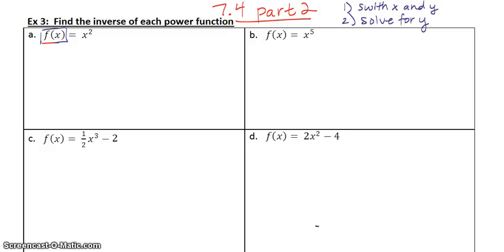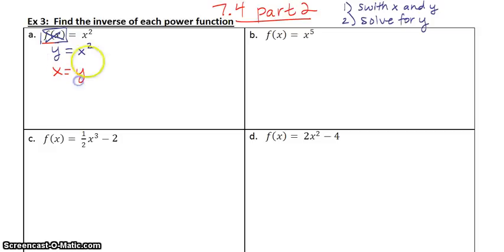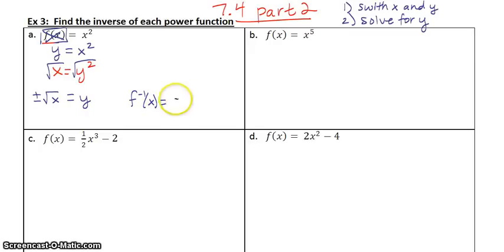Remember, f of x is the same thing as y, so replace it before you do anything. For example 2a, y equals x squared. Step 1: switch x and y. Step 2: solve for y — to get rid of a square, we take the square root. When you square root something, you put a plus or minus in front. So the inverse of x squared is plus or minus the square root of x. In official function notation: f inverse equals plus or minus the square root of x.